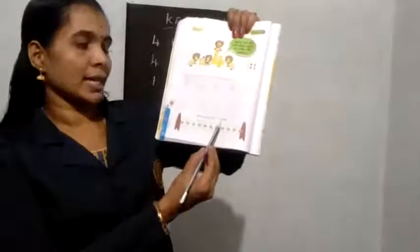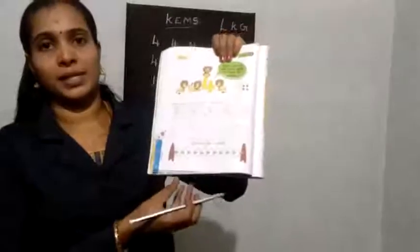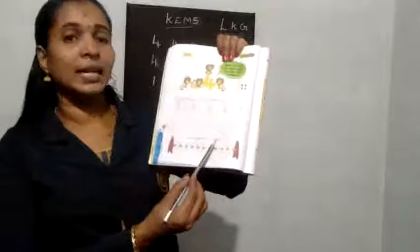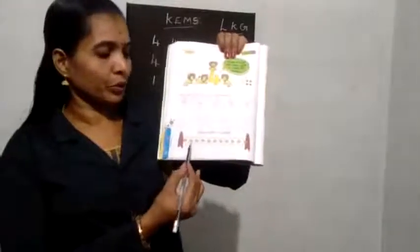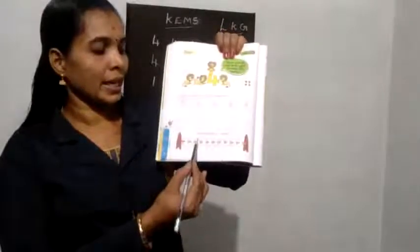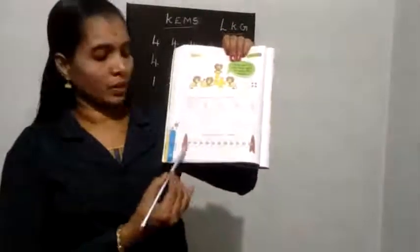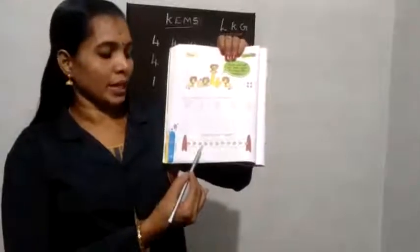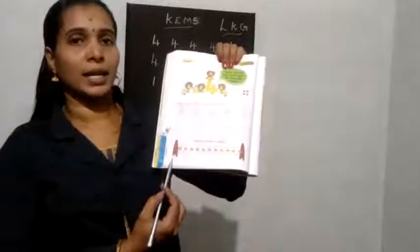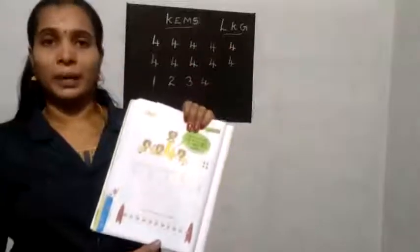Count and color 4 bits. Count and color 4 bits. 1, 2, 3, 4. 1, 2, 3, 4. Color 4 bits.